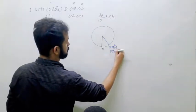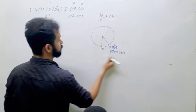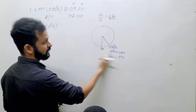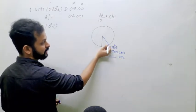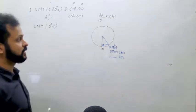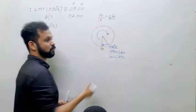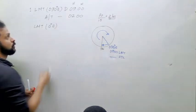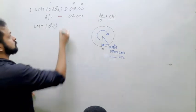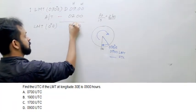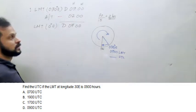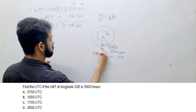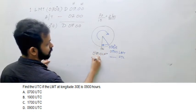At 30 degrees east, the LMT is given as 0900. You are asked to find the UTC, which is basically the LMT at the Greenwich Meridian. From 30 degrees east you are moving in the westward direction, and LMT decreases as you travel westward, so you subtract. The result is 0700 UTC, same day.